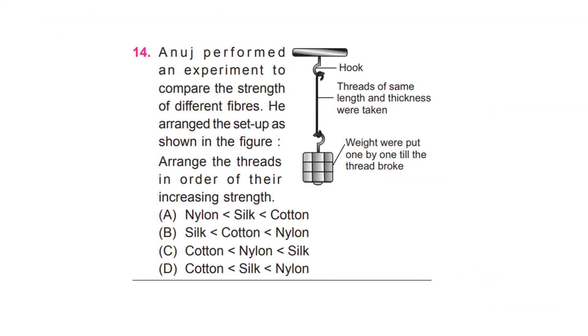Anuj performed an experiment to compare the strength of different fibers. He arranged the setup as shown in the figure. Arrange the threads in order of their increasing strength. D, cotton, silk, nylon.